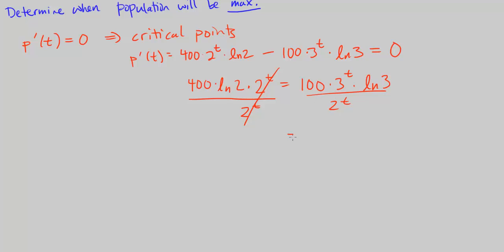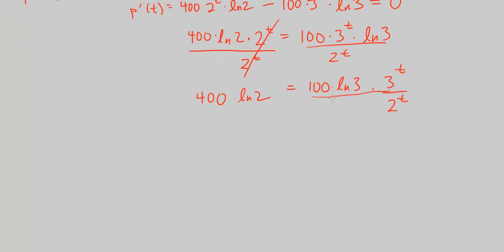So now we just want to solve for t. What we need to do first is basically we know that we can go ahead and divide both equations by 2 to the t. That's going to cancel them here and give us 100 times ln of 3 times 3 to the t over 2 to the t, equals 400 times ln of 2.